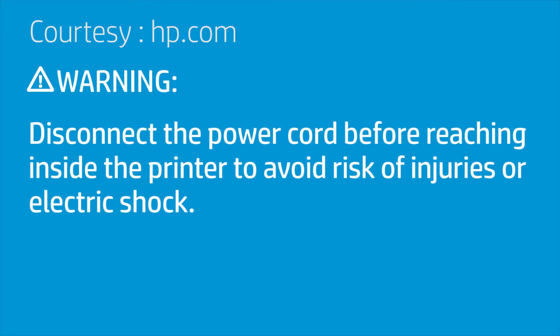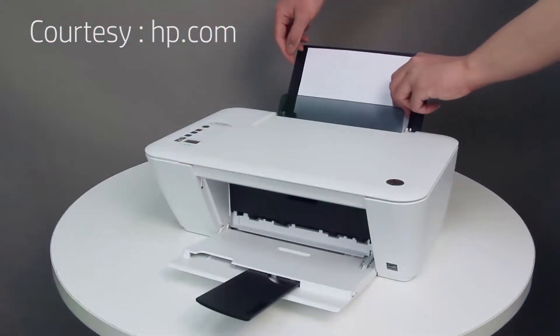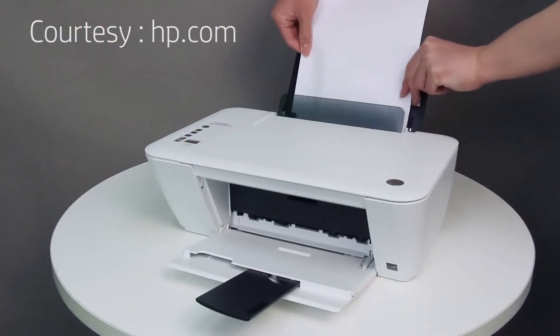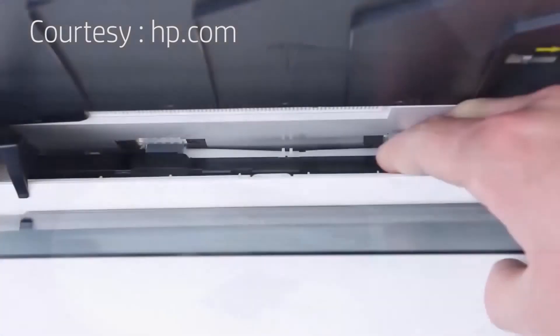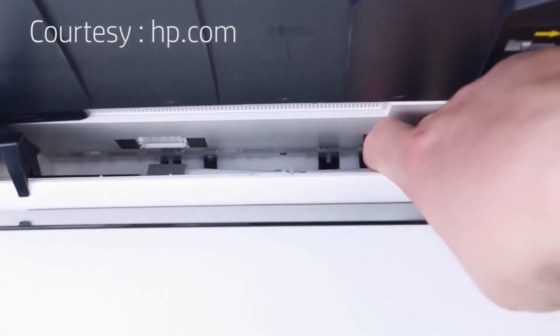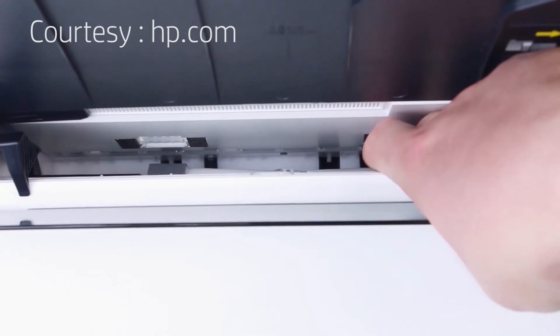Before reaching inside the printer, disconnect the power cord to avoid risk of injuries or electric shock. Remove the stack of paper from the input tray. Move the pick mechanism inside the input tray and remove any objects.